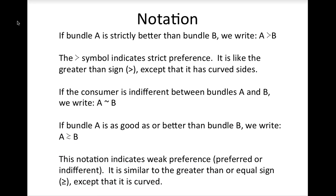Think about what the indifference curves would look like if you were graphing two bads rather than just one. If instead of hating lima beans I didn't care about them one way or the other, my indifference curves would be horizontal lines — because all I care about is the amount of chocolate I consume, I am indifferent between a given amount of chocolate and either no lima beans or a lot of lima beans. In this case, the better bundles are to the north.